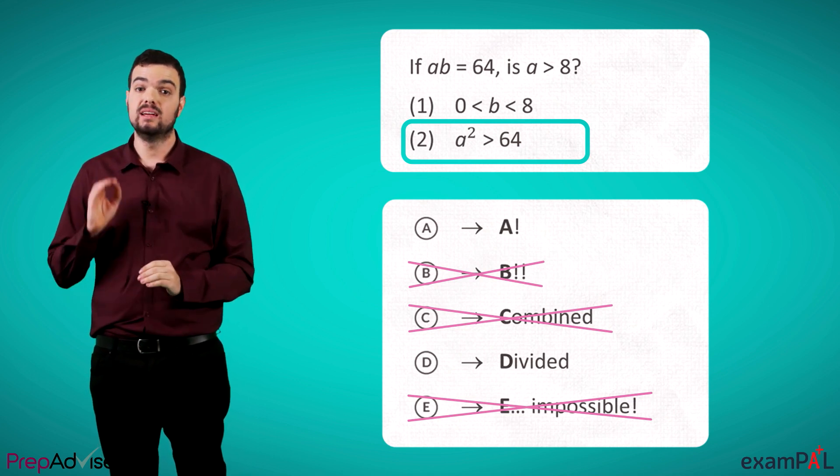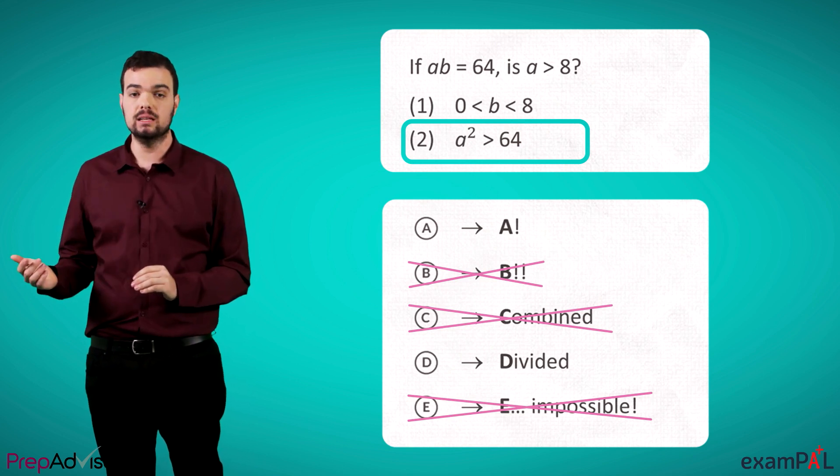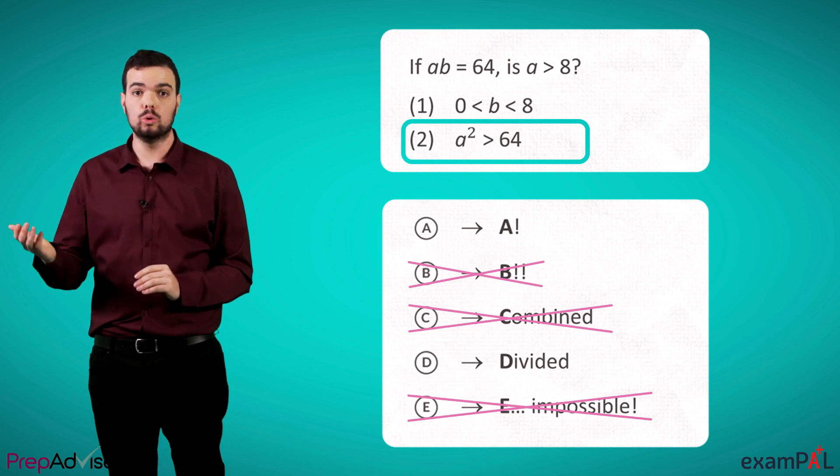So, if a squared is larger than 64, a definitely could be larger than 8. 9, 10, 100, all work.